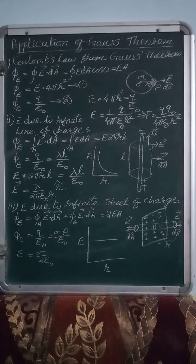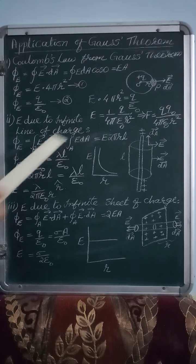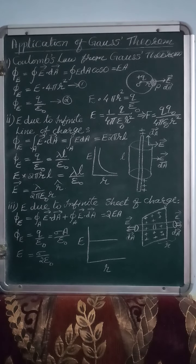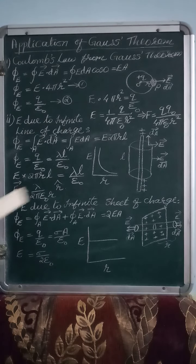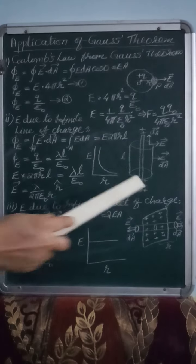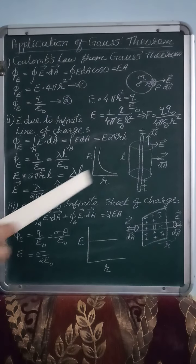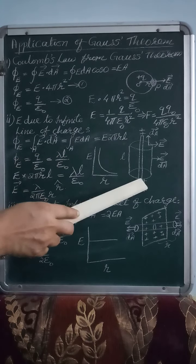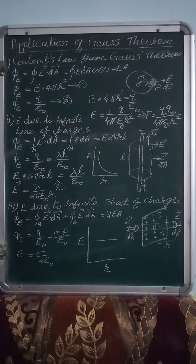Second application: we have to find out the electric field due to an infinite line of charges. We have placed +Q charges on the infinite line. We have considered a Gaussian cylindrical surface whose height is L and radius is R. This Gaussian surface contains three parts: the upper circular surface, the lower circular surface, and the curved surface. We have to find out the flux through these three surfaces.